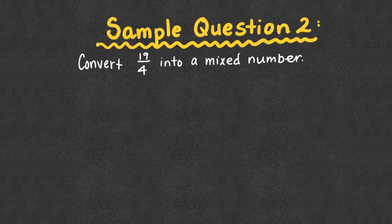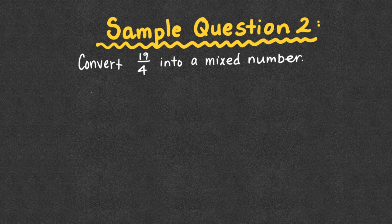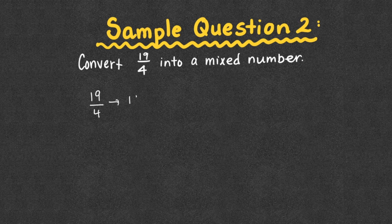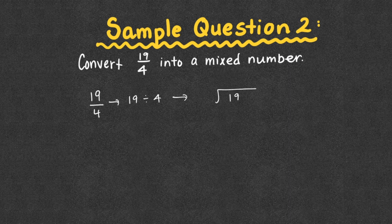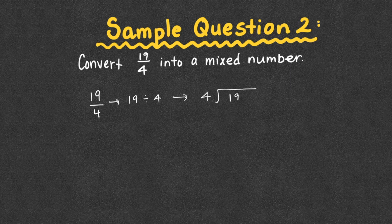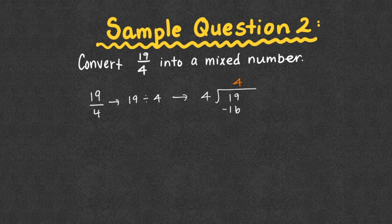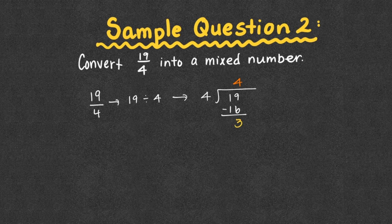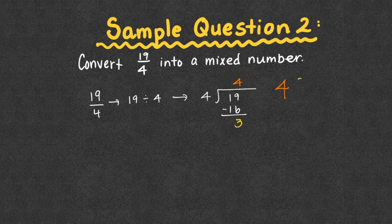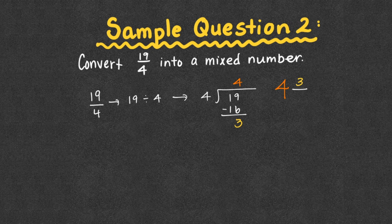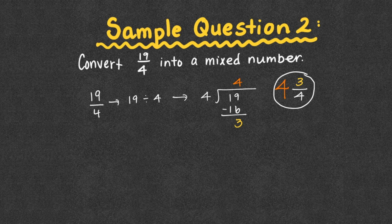We are going to convert 19 fourths into a mixed number. So if we look here, 19 fourths really means 19 divided by 4. Again, I'll show you the model after this, but let's do the shortcut of division. So 19 divided by 4 is going to give us 4. 4 times 4 is 16. We subtract and we get 3. So we look at what is our final answer. Well, 4 went into 19 four whole times. And it had 3 out of 4 left over. So our answer would be 4 and 3 fourths.